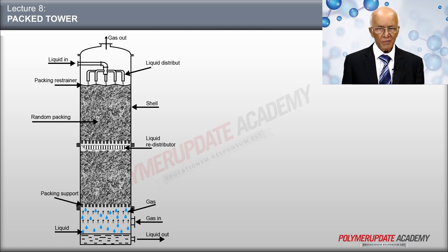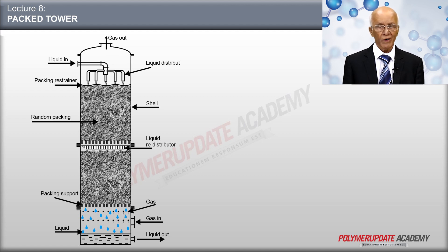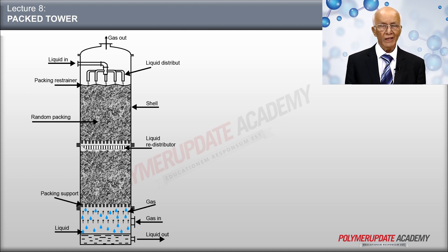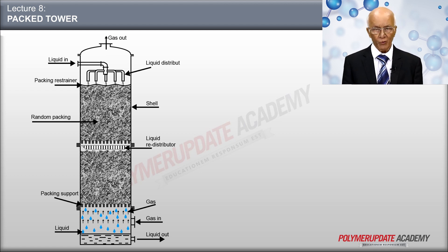The packed tower is a vertical unit with a variety of internal devices. At the bottom, it must have a liquid seal and a liquid outlet. Above the liquid seal there is a gas inlet, and above the gas inlet there is a packing support, which will allow gas and liquid to pass through but would not allow packing to drop through.